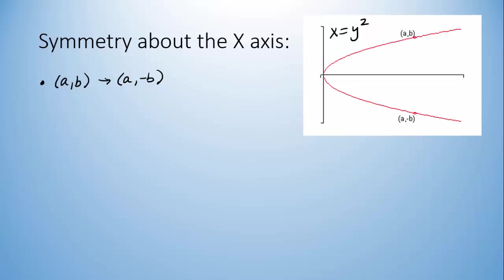So just like before, if you choose any point on the graph here, straight across the x-axis, there should be another point that lines up with it, but has the opposite y-coordinate.